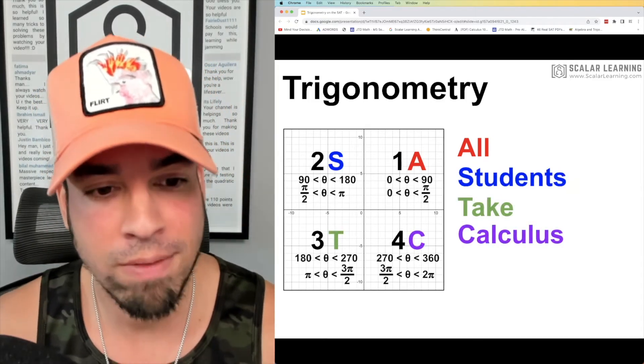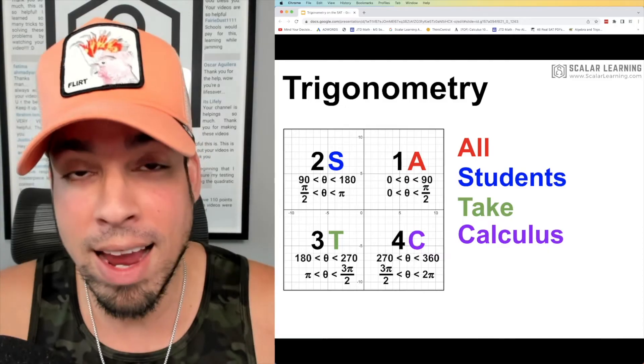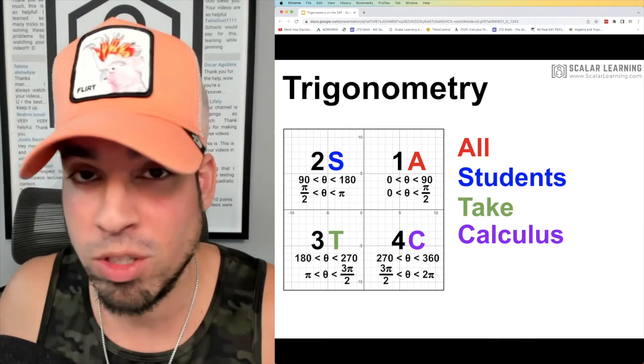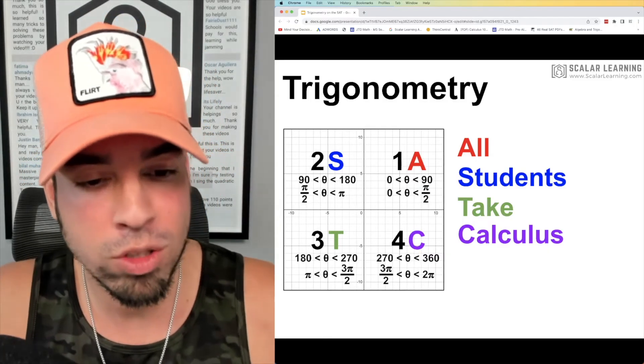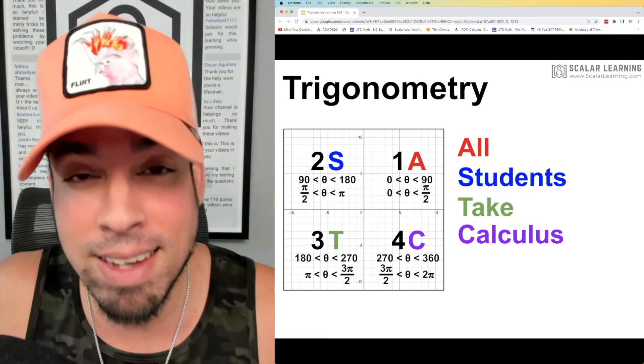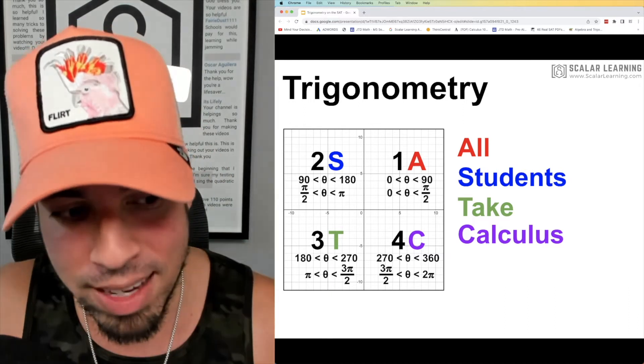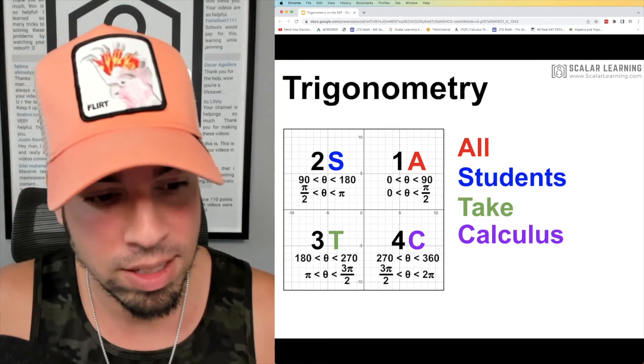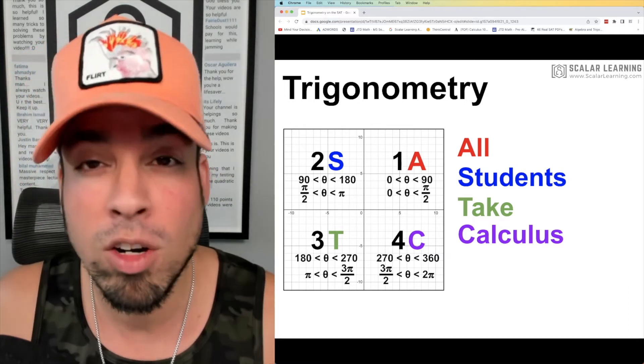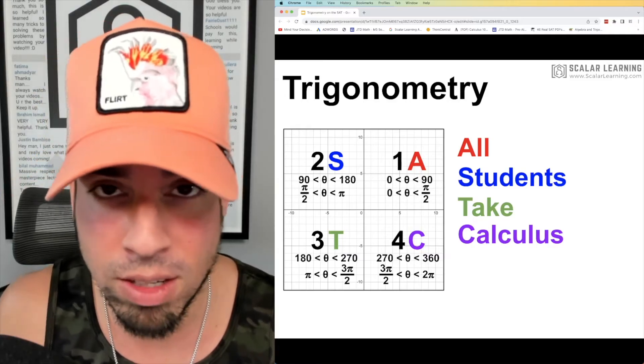Now we have this cool little acronym that you can remember: All Students Take Calculus. So what does this mean? This means that for quadrant one, everything is positive—whether it's sine, cosine, tangent. For quadrant two, S—All Students—S means sine is positive, everything else is negative. Quadrant three, tangent is going to be positive because of the T. And quadrant four, C—cosine is going to be positive, everything else is negative.